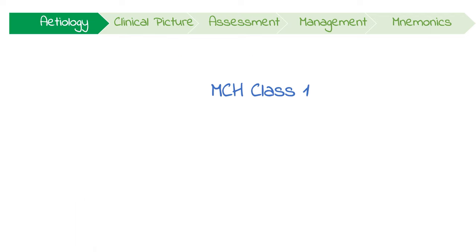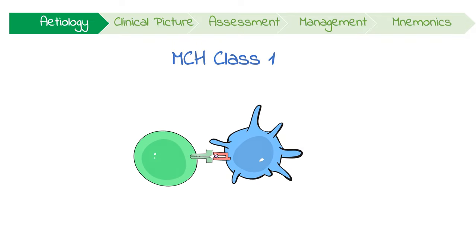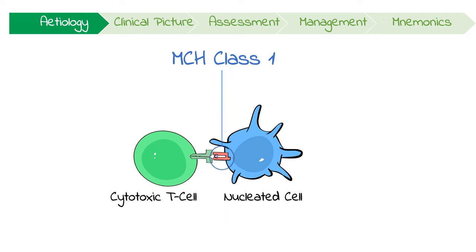In general, MHC class 1 is expressed on all nucleated cells and acts to present intracellular antigens like viruses to cytotoxic T cells. If they're infected, or if something is in the cell that shouldn't be there, these cytotoxic T cells can then induce apoptosis.